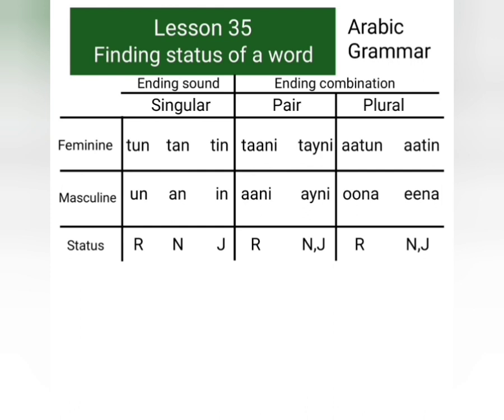Masculine pair words with ending combination ani have the status rafa, and those having ending combination aini can have the status nasab or they can have the status jar. Masculine plural words with ending combination una have the status rafa, and masculine plural words having ending combination ina can have the status nasab or they can have the status jar.